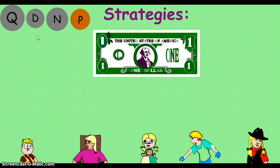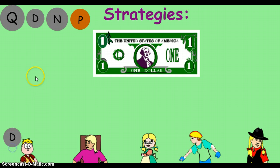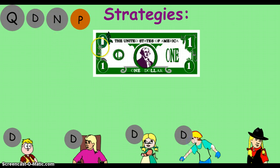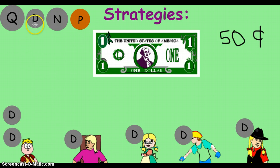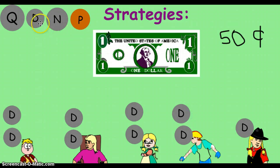Remember, we need to keep track. If we're breaking down the dollar, we need to keep track of how much money we've used. So let's give everyone a dime — that's ten, twenty, thirty, forty, fifty cents. So we have used fifty cents. That means we have how much money left? Well, I know that fifty cents is half of one dollar, so I can probably do that same thing again — give all of my friends another dime. Ten, twenty, thirty, forty, fifty. And now I have fifty more cents.